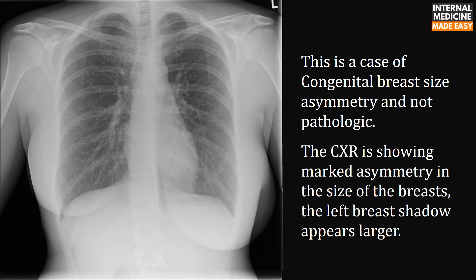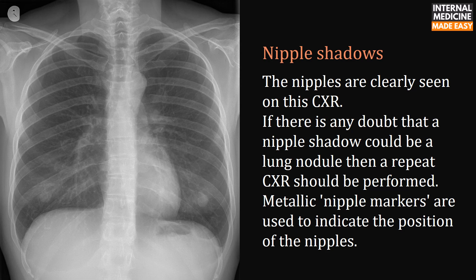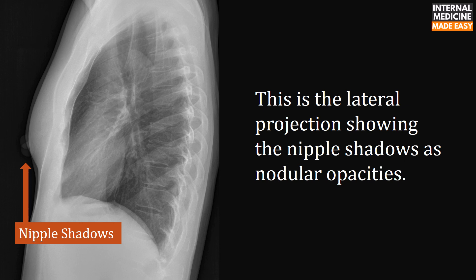This is a case of congenital breast size asymmetry and not pathology — the x-ray shows marked asymmetry in breast size, with the left breast shadow appearing larger. Regarding nipple shadows: the nipples are clearly seen on this chest x-ray. If there is any doubt that a nipple shadow could be a lung nodule, a repeat x-ray should be performed; metallic nipple markers are used to indicate the position of the nipples. The lateral projection shows nipple shadows as nodular opacities.